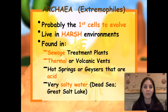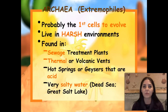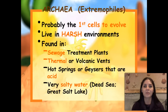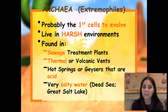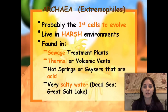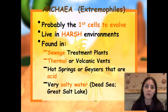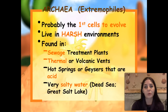Archaea live in really salty environments, really hot environments deep in the ocean at hydrothermal vents, which are found at convergent or divergent boundaries. They can be found in sewage plants and very acidic environments — all kinds of conditions that are really extreme. Again, these are prokaryotic, and they are also autotrophs, meaning they create their own food.